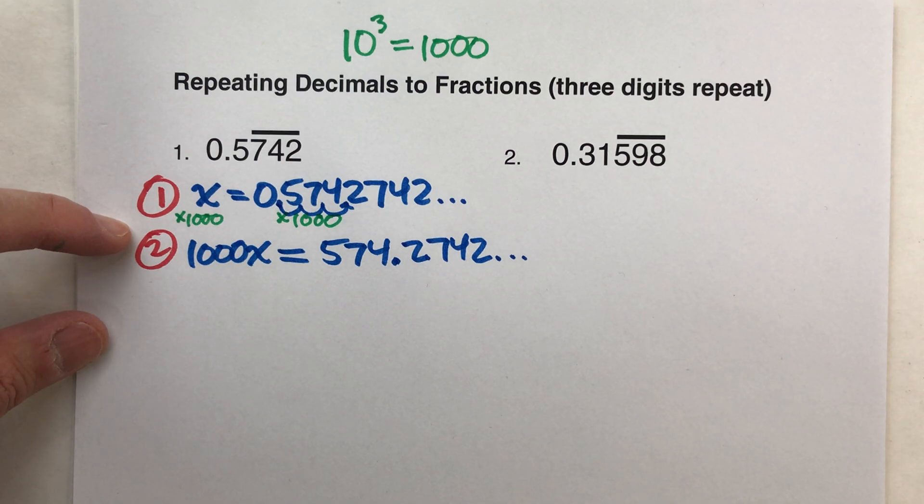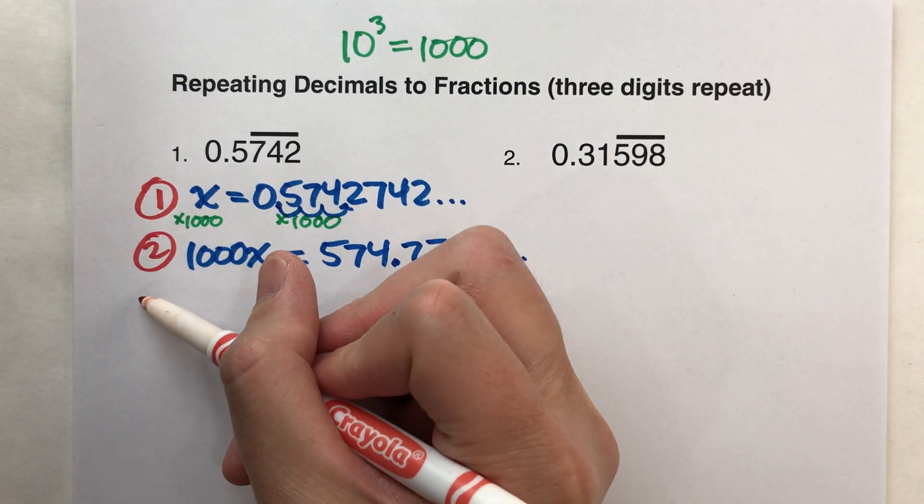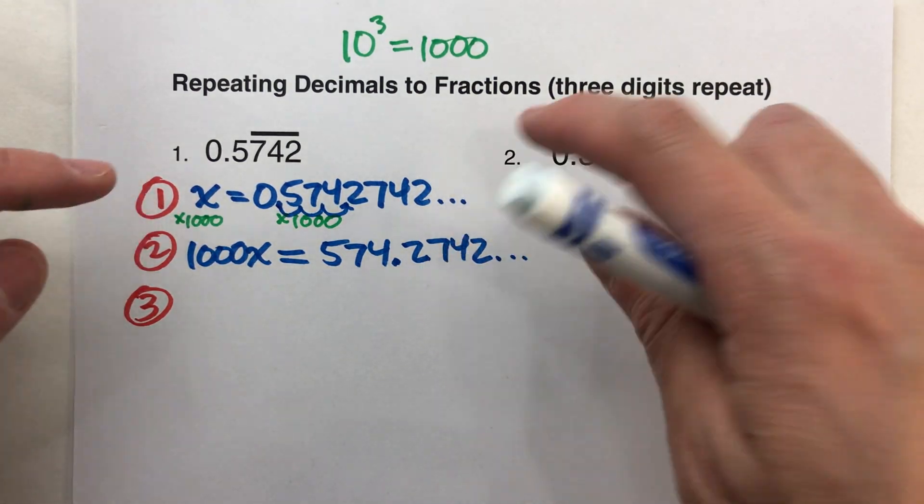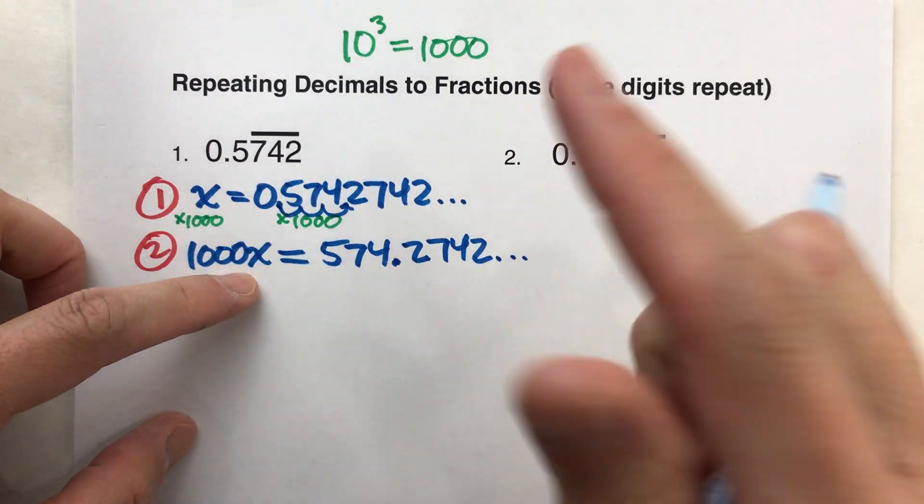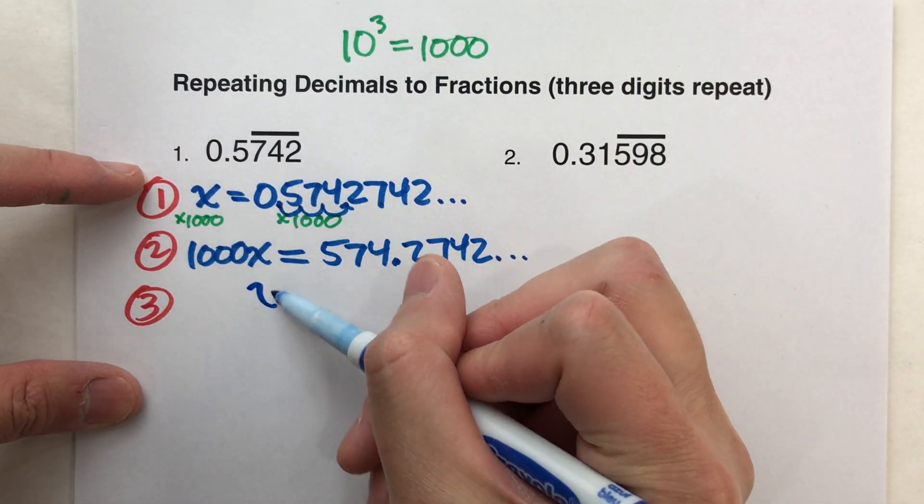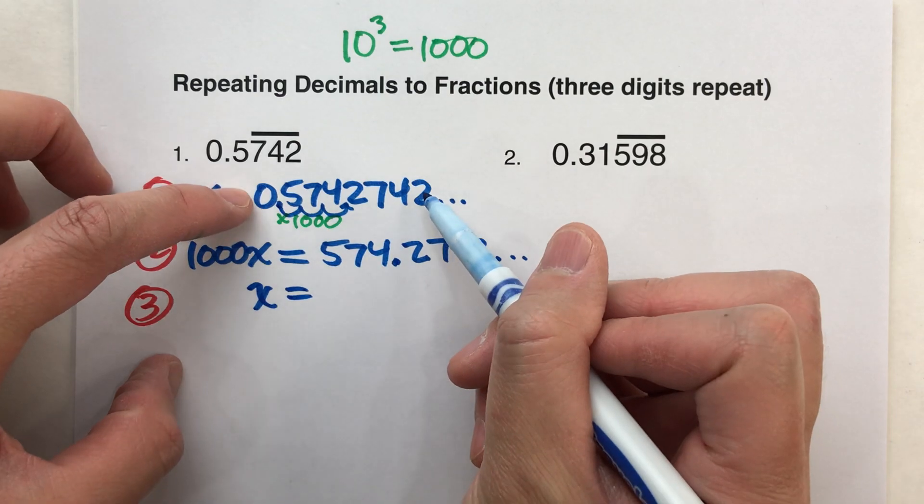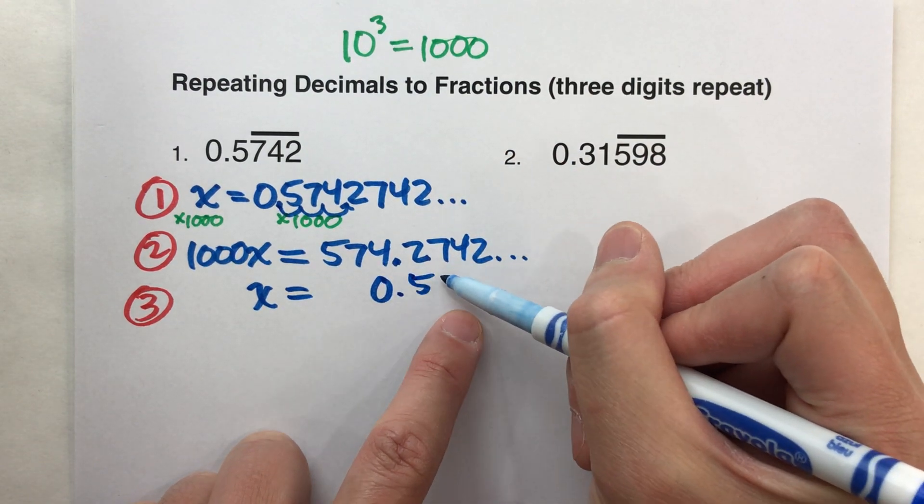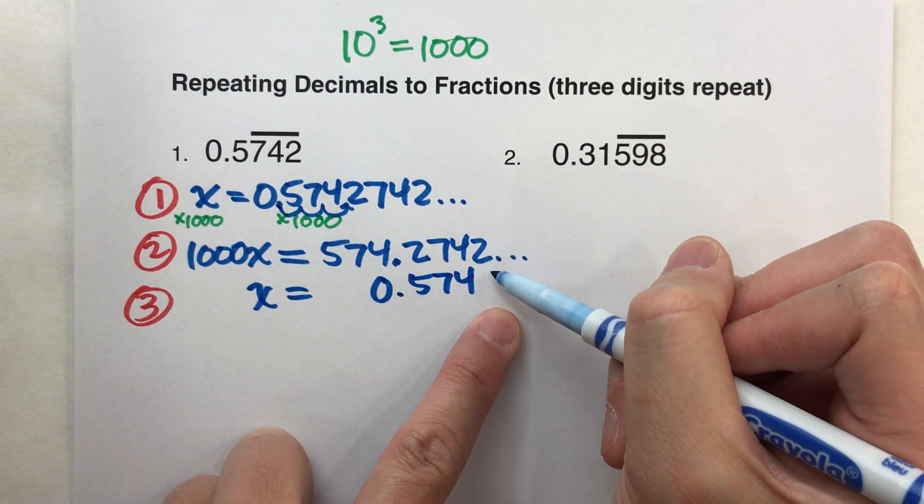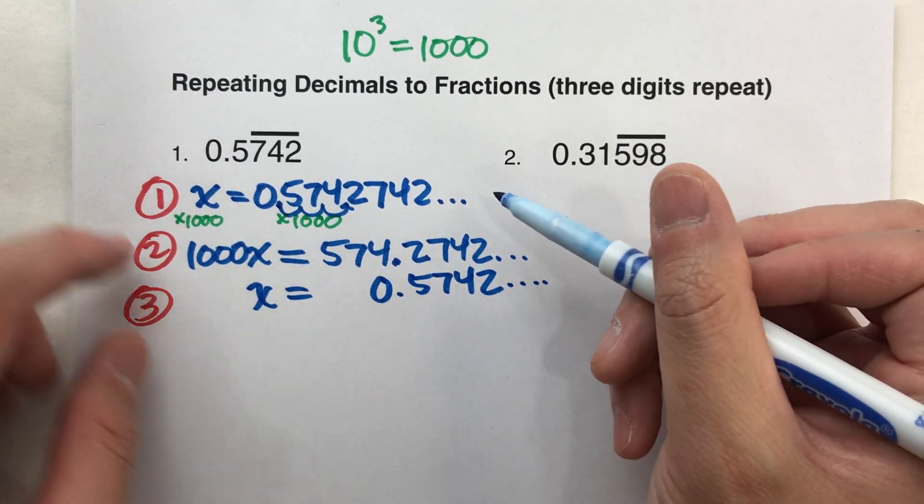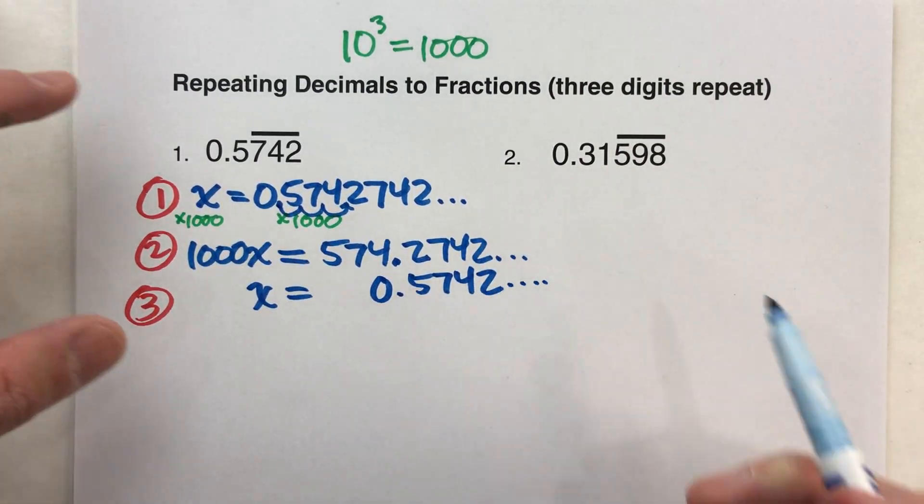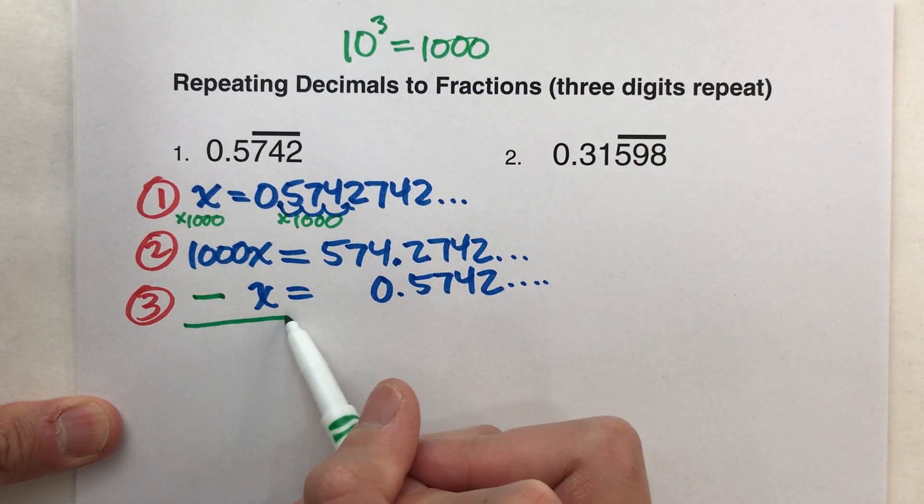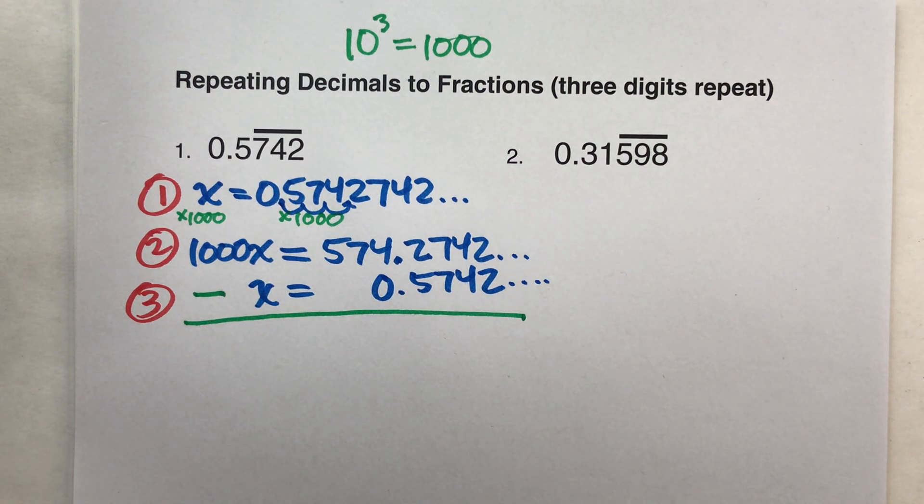Alright. So, there we go. I've got my second equation. Step 3. I'm going to subtract the two equations. So I've got my new equation. I'm going to take the old equation and put it underneath it, and I'm going to line things up. I'm going to line up that x equals, and when I write this number, line up that decimal. So, 0.5742, 742, 742, remember it's going to repeat 742, I'm just going to write that much so it lines up with what I had before, and like I said before, we are subtracting the two equations.